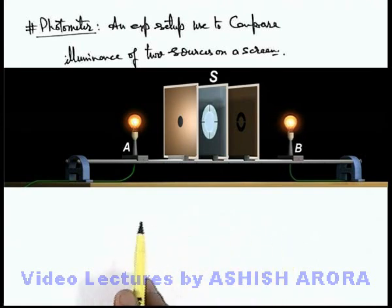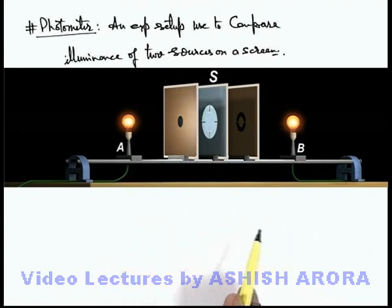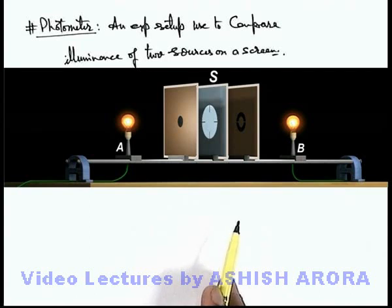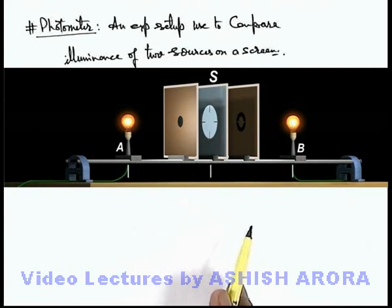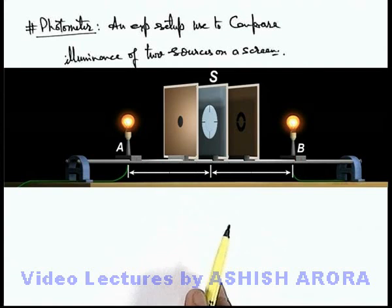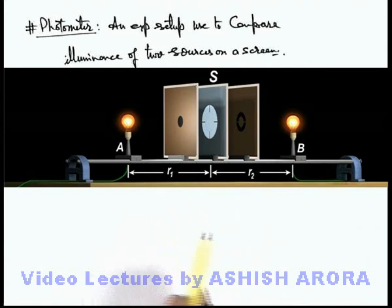Now if the sources are adjusted in such a way that there is no differentiation in the illumination of the central circular patch and the annular-shaped zone, that means the illumination on screen due to the 2 sources remains the same.